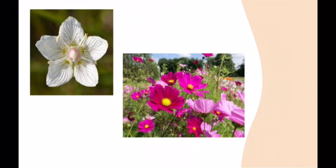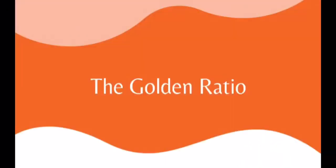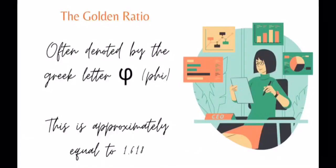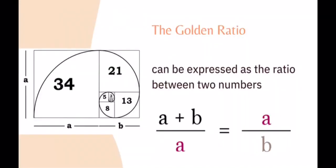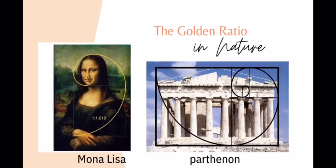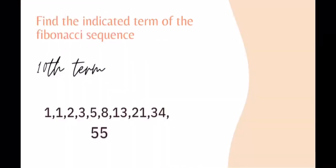The golden ratio is related to the Fibonacci sequence. The golden ratio, often denoted by the Greek letter phi, is approximately equal to 1.618. It can be expressed as the ratio: a over b equals a plus b over a. We can relate the golden ratio in nature, in the painting of the Mona Lisa, and in the Parthenon. These examples all represent the golden ratio.